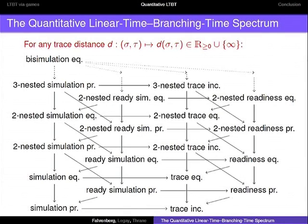This is just the same spectrum as before, but now all of those are distances. Additionally, we have this spectrum of distances for any trace distance which the application might provide. So every time somebody thinks of a way to measure differences between traces, we can now produce a full spectrum like this.